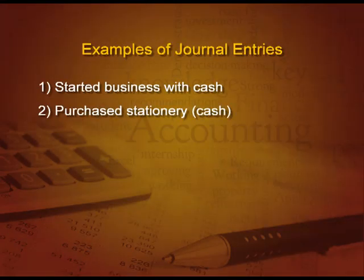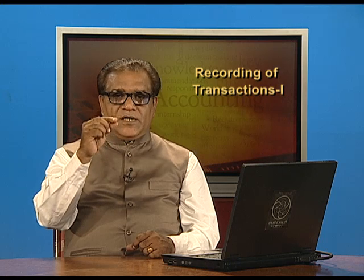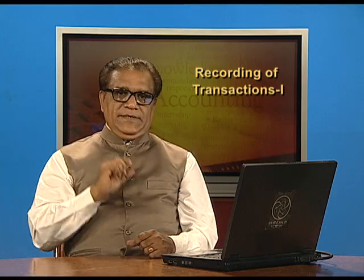Purchased stationery in cash. Is your cash coming or going? It is going. So it is an asset going out, which means it is credit. What you have done is an expense of stationery, and expenses are debit. So in the particulars column: stationery account debit in the first line, and To cash in the second line.